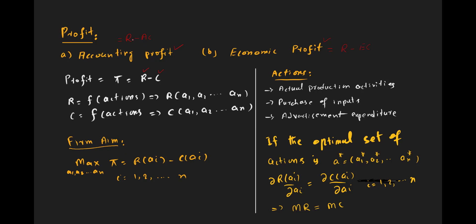Accounting profit is calculated by subtracting accounting cost from total revenue of the firm. Similarly, economic profit is calculated by subtracting economic cost from total revenue. Accounting profit is differentiated from economic profit on the basis of cost: accounting profit considers accounting cost, while economic profit considers economic cost.